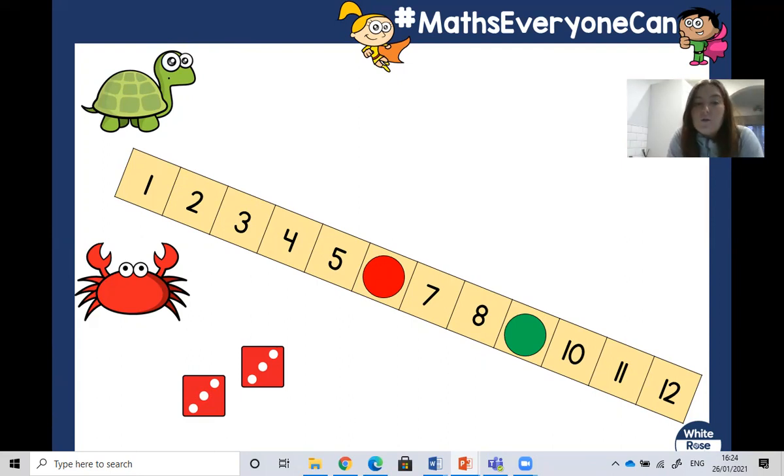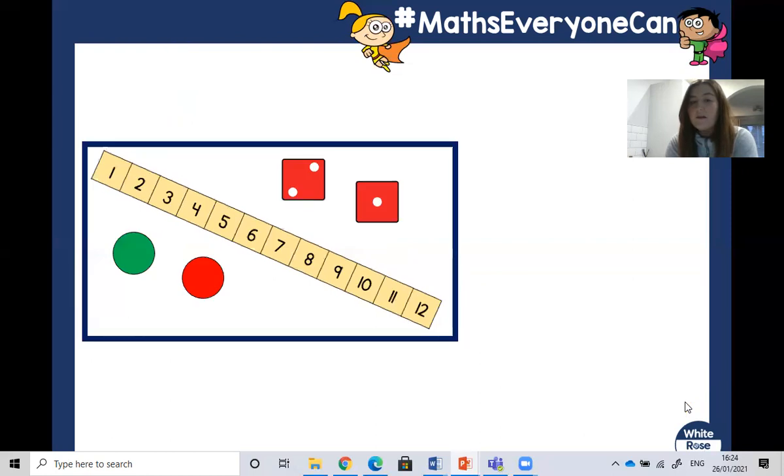So our red counter is going to move six places forward. What number do you think it will land on? Who do you think will be in the lead now? Let's have a look. One, two, three, four, five and six. So that means the crab has won the race. He has managed to get from the start all the way to the end first.